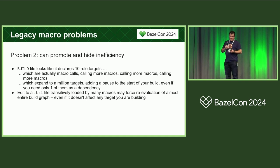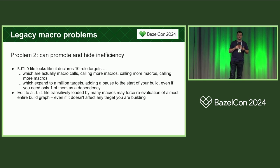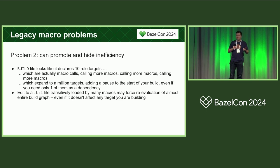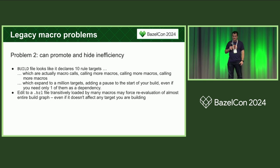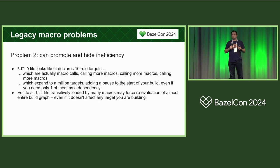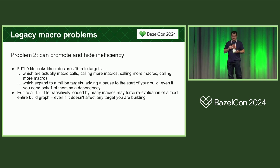Another problem: legacy macros can promote and hide inefficiency. You might have a build file which looks like it declares 10 rule targets, but those are actually macro calls which expand to more macros which expand to more macro calls. You will get a million targets in effect, which add a visible pause to the loading phase of your build, even though you might only need one of those targets as a dependency. Additionally, if you edit a BZL file that is transitively loaded by a bunch of macros your repo uses, that edit might invalidate most of your build graph, even if it doesn't actually change any targets your build needs.